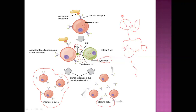Memory cells remain circulating in the body for a long time. If the same antigen or pathogen enters the body again in the future, these memory cells start dividing rapidly and start secreting antibodies against it. That is why secondary infection takes less time to recover from — because memory cells are already developed and take less time to produce antibodies, so your body responds very quickly compared to when the antigen first entered.